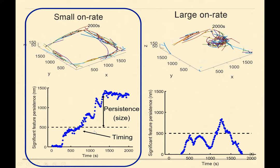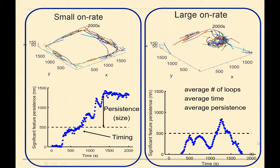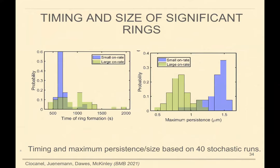We did a proof of concept with our method on these two kinds of simulations. You can see the two paths that emerge for the most significant one-dimensional hole in topological data analysis. Since we have a stochastic model, we carried out 20 to 40 simulations for each setting to get a sense of the timing or onset of ring channel formation and its persistence — defined as the largest persistence over time. For the small binding rate, you have a ring forming very early in the simulation and it's more persistent. For the large binding rate, you see this all over the place with some rings forming, but they're certainly less persistent.